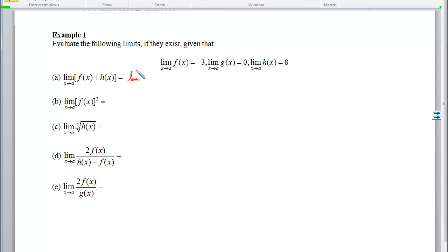So on part a here, we can distribute that limit notation over the addition and see that the limit of f plus h as x approaches a will be the same as the limit of f as x approaches a plus the limit of h as x approaches a. Now this piece we know because it was given to us as negative 3 and this one we know as well because it was given to us as 8. So I can put those together and end up with a 5.